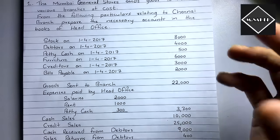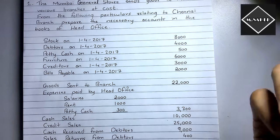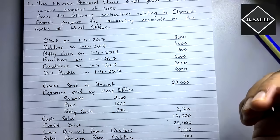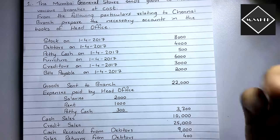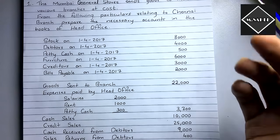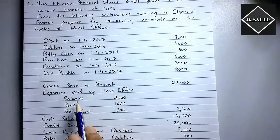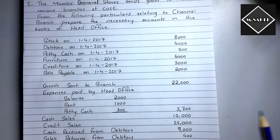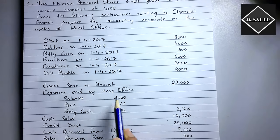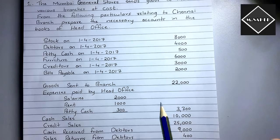The expenses — salaries, rent, and petty cash (small amounts for stationery and daily purposes, 300) — are incurred by the branch but paid by the head office. These expenses will come on the debit side of the branch account as 'To Bank'. Then we have cash sales and credit sales.